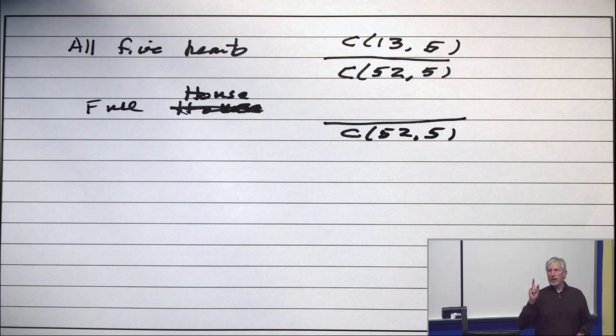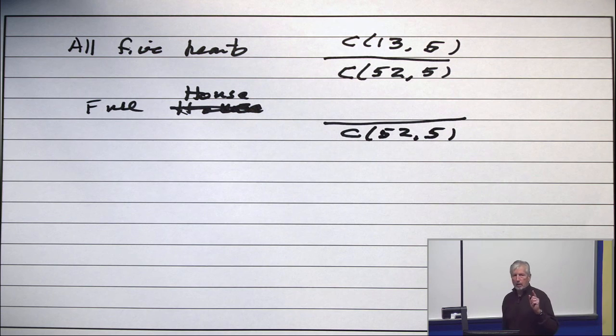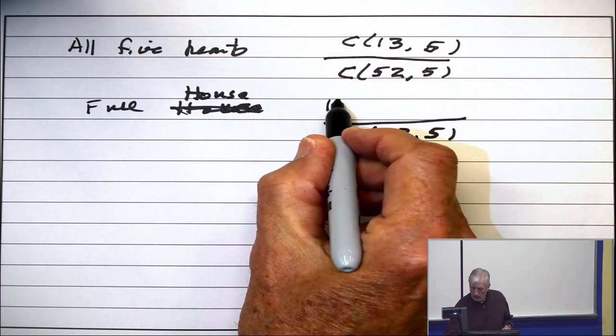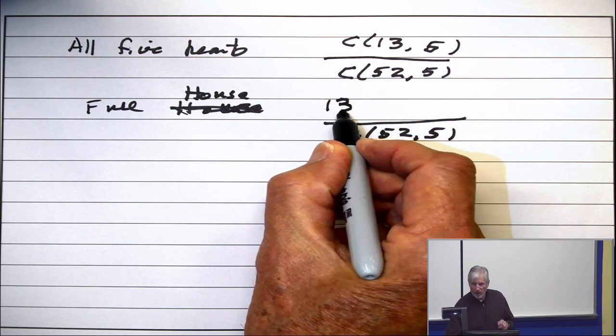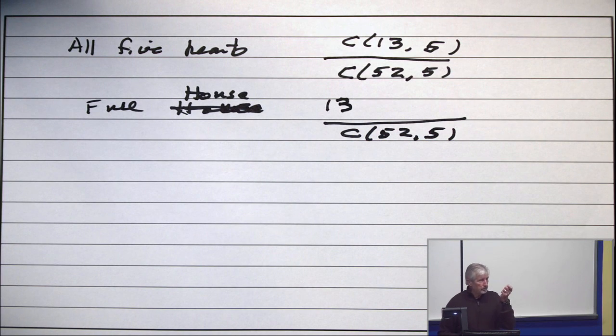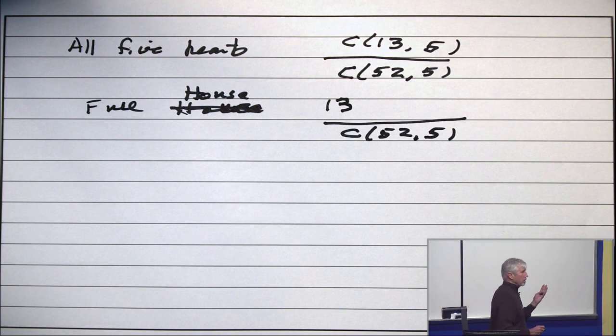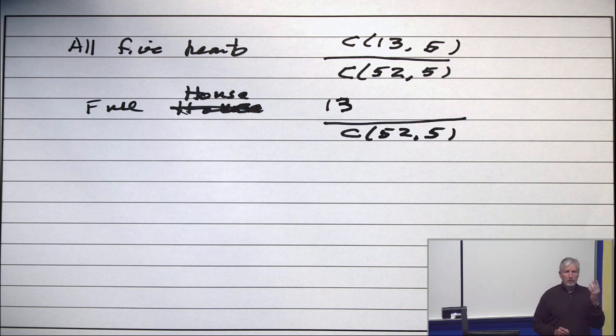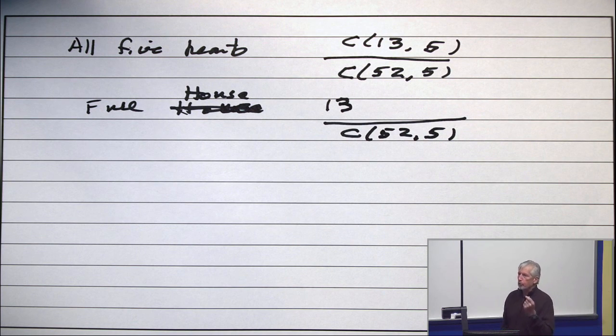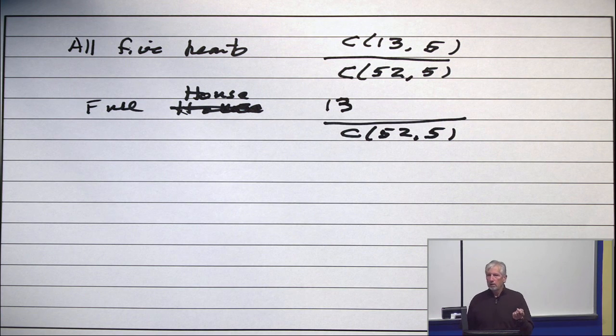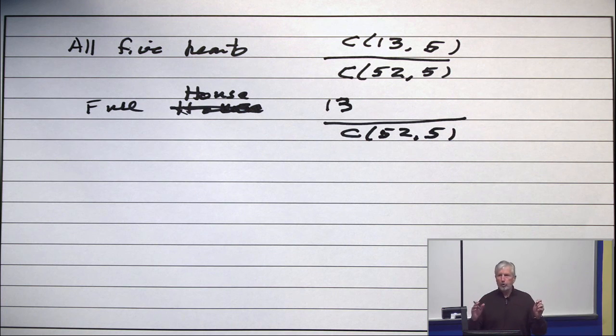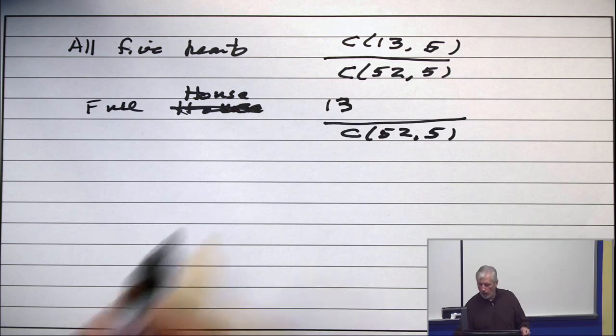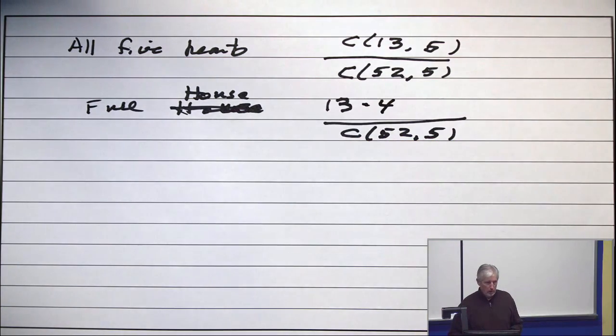Choose the kind for the 3. How many ways to do that? Thirteen. Thirteen ways to choose, like a king. Okay. Now I've got 4 of them. I need 3 of them. How many ways to choose 3 from 4? If I wanted to be explicit, I'd say 4 choose 3, or C(4, 3), or I just write, that's 4.